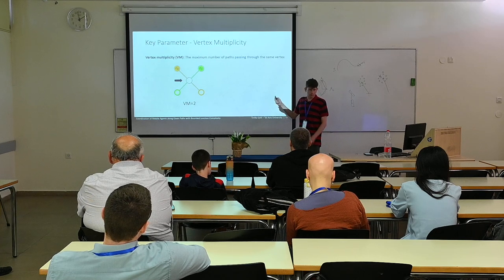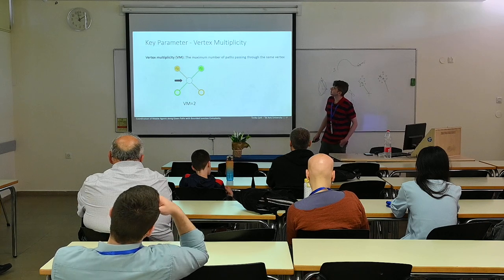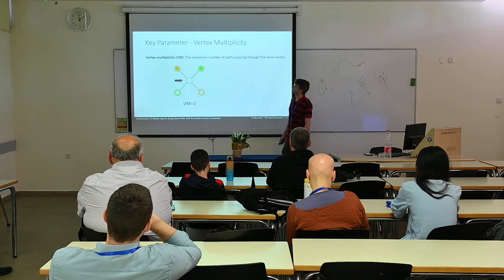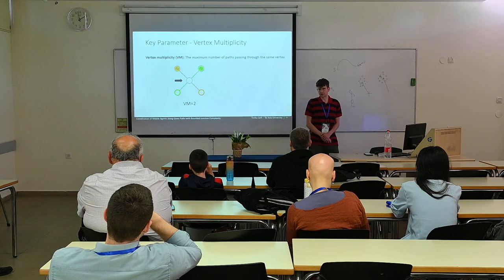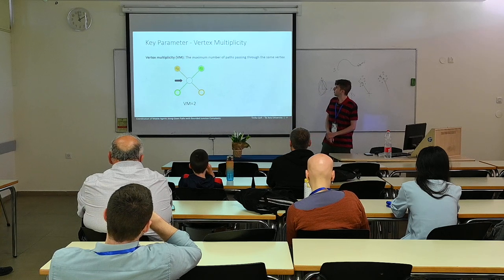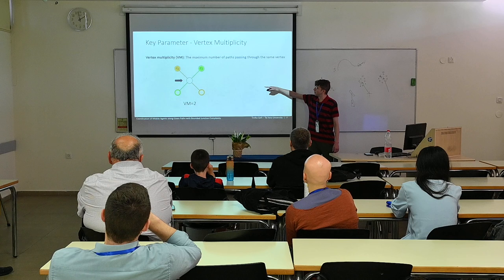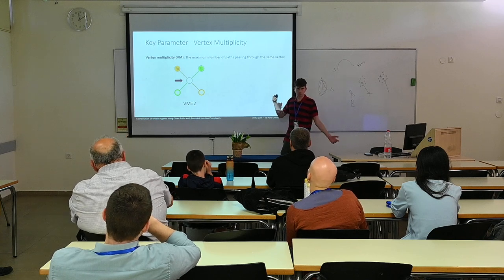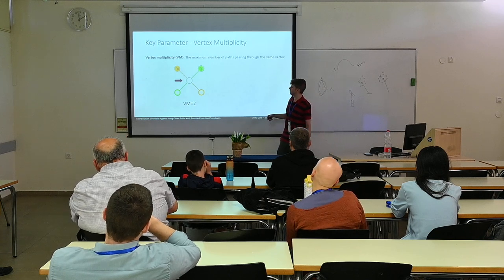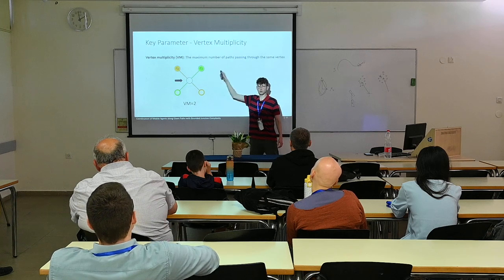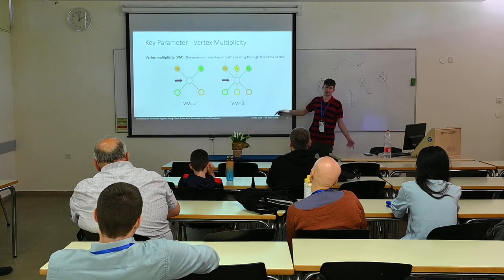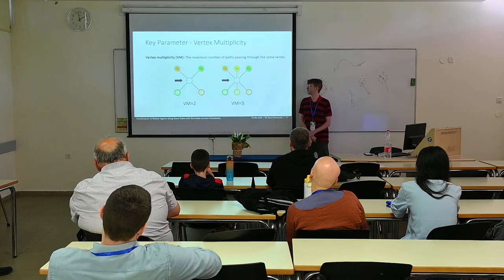A key parameter is vertex multiplicity, defined as the maximum number of paths that pass through the same vertex. We abbreviate it VM. In this example, for the large vertex, VM is 2 because two paths go through it. In another example, VM is 3.